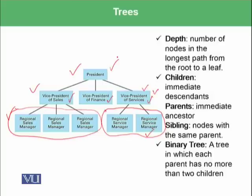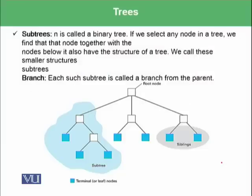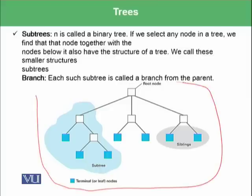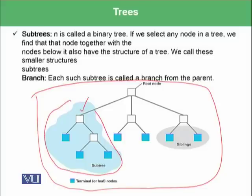There is another concept of a binary tree — a tree in which each parent has no more than two children. There is also the concept of a sub tree: if we select any node in a tree, that node together with the nodes below it also has the structure of a tree. We call these smaller structures sub trees. We selected a node as a root node and said that this is a sub tree. Each sub tree is called a branch from the parent node.